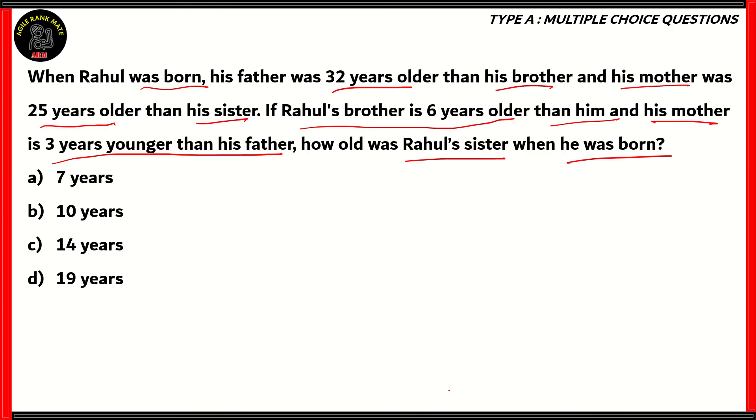Now, let's look at each clue. Father is 32 years older than brother. Mother is 25 years older than sister. Mother is 3 years younger than father. These are general relations. However, if you look at this clue, Rahul's brother is 6 years older than him. And if you look at the first two clues, you see that they were clues when Rahul was born. So therefore, we can use this clue, brother being 6 years older than him, in order to solve the rest of the puzzle.